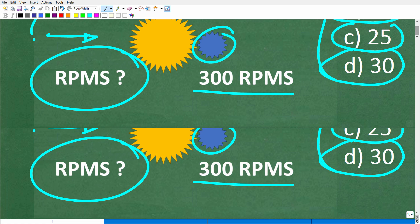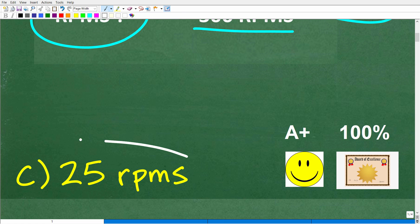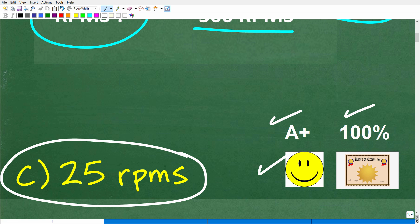Let's take a look at the correct answer. The correct answer is C, 25 RPMs. If you got this right, you definitely get a happy face, an A+, a 100%, and a Certificate of Excellence.